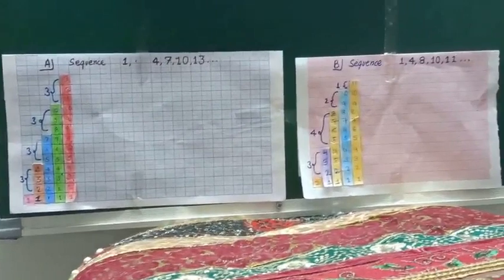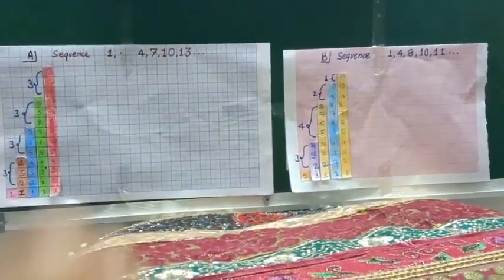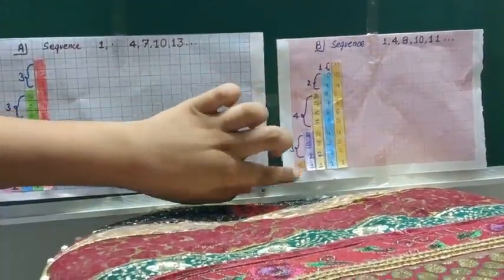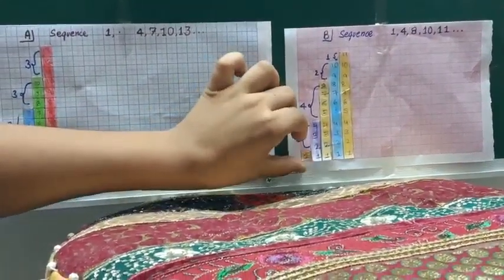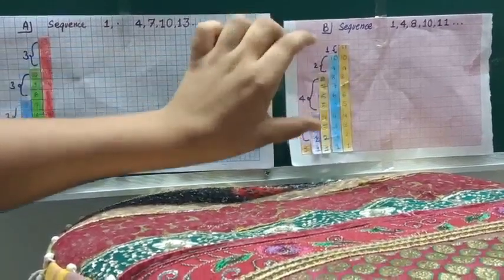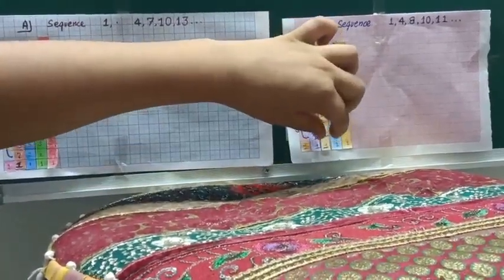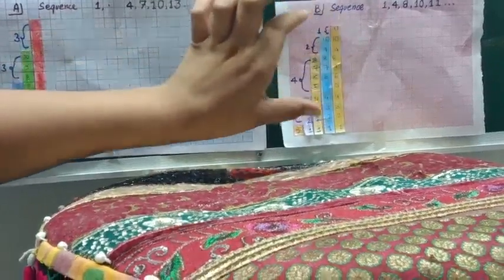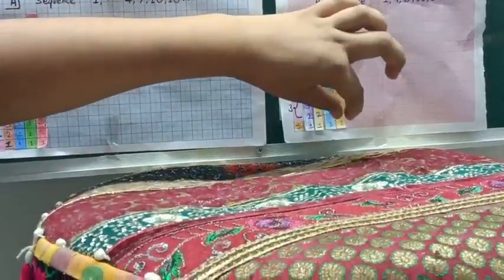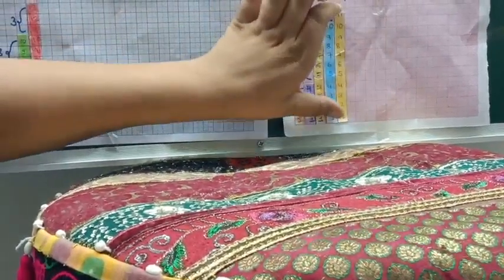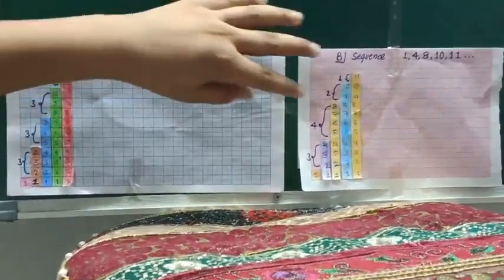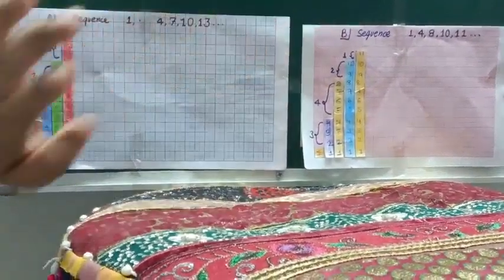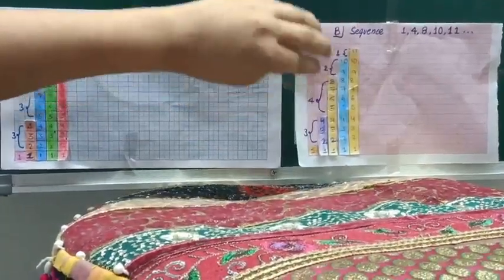Now let us go to the 2nd graph. We take 5 colourful strips: the 1st strip is 1cm broad and 1cm long, the 2nd strip is 1cm broad and 4cm long, the 3rd strip is 1cm broad and 8cm long, the 4th strip is 1cm broad and 10cm long, and the 5th strip is 1cm broad and 11cm long. We can observe that the common differences of these 5 strips are 3, 4, 2, and 1. So the common difference is not equal, and this is not an AP.